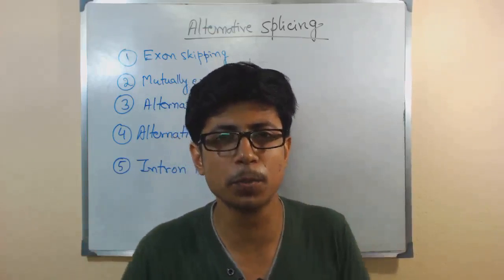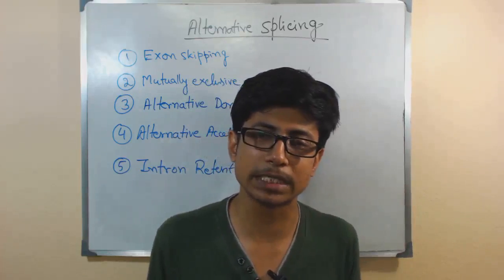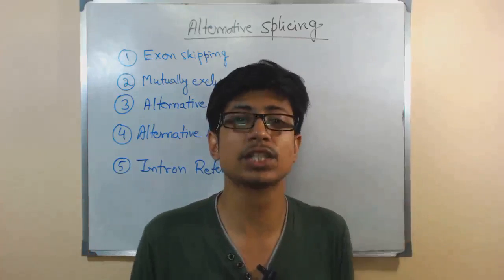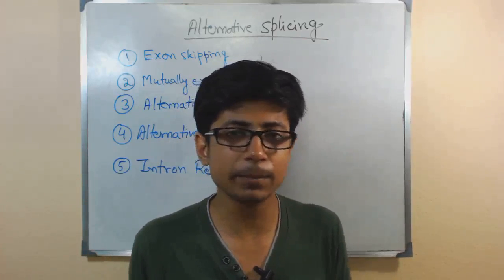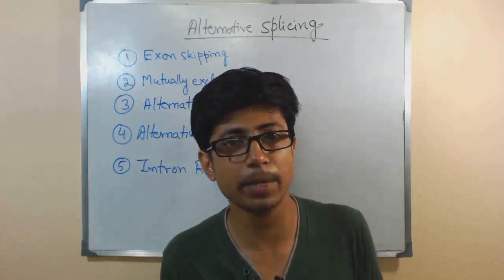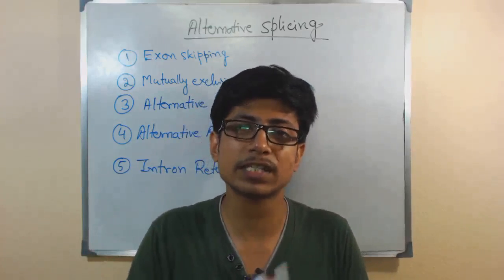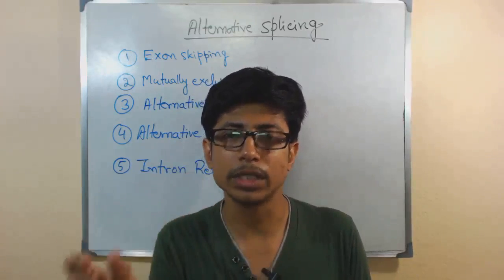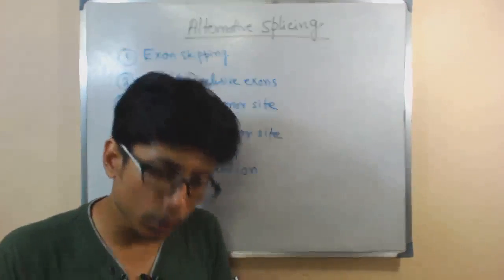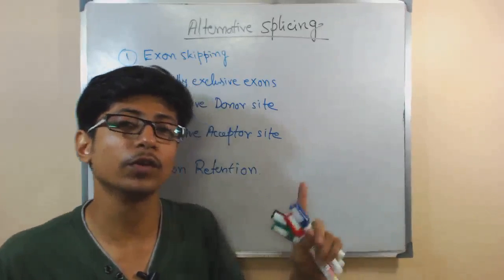Alternative splicing takes place about 92% of the time in our pre-RNA transcripts, so you can imagine how common this process is in our body. It produces many varieties of proteins. Ultimately, over 90% of the sections of DNA present in eukaryotic cells are non-coding, and all those proteins are made from less than 10% of the genes — the exons. Alternative splicing gives us evolutionary advantage and is definitely beneficial, though sometimes it can produce disease-causing proteins.